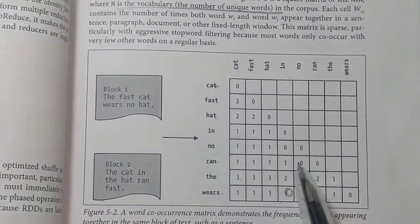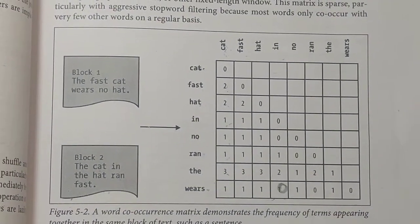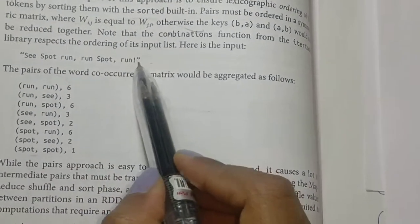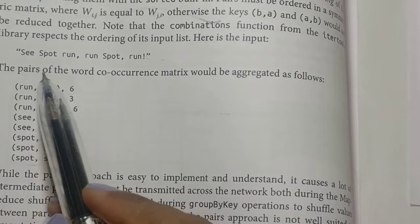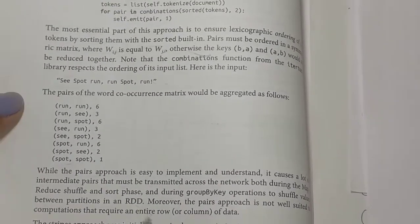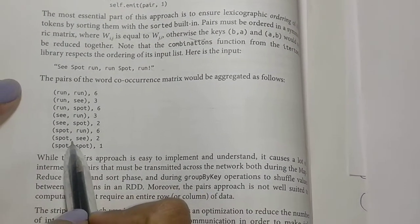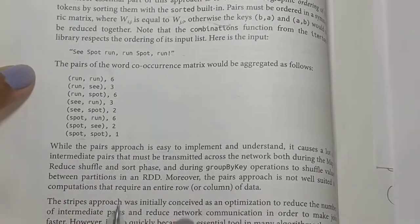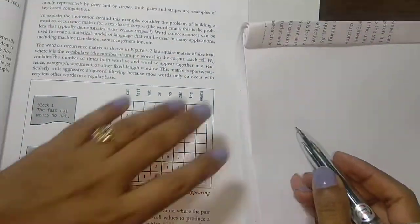We are going to look at another example of the word co-occurrence matrix. We've already studied the construction of the word co-occurrence matrix in the previous video. Now we are going to look at another example which I found difficult. Just for your information, revise the previous one.